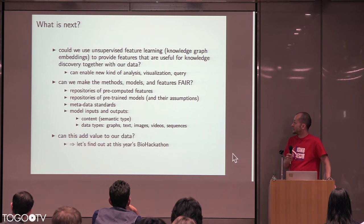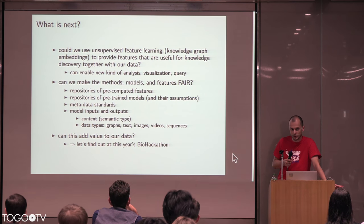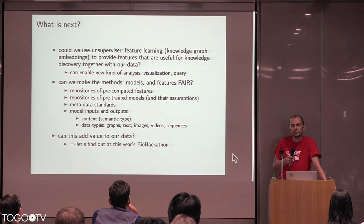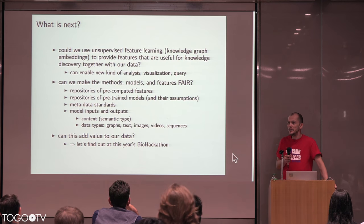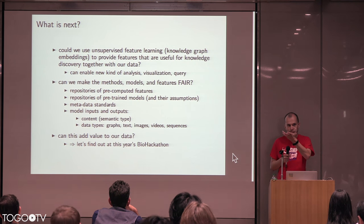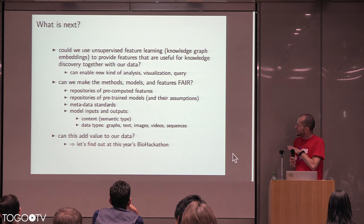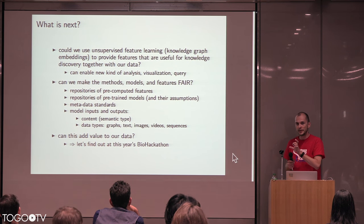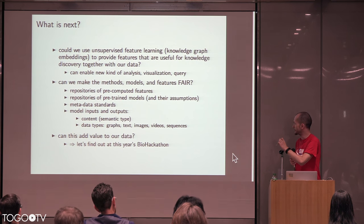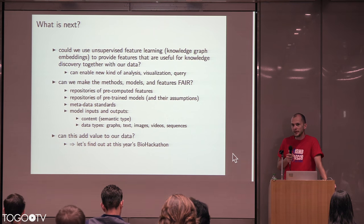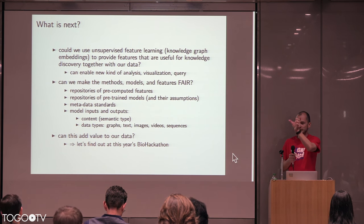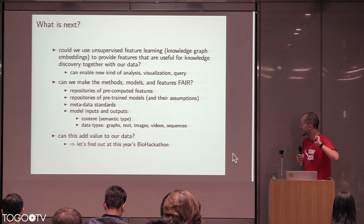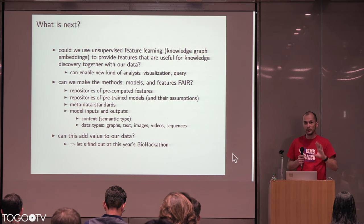There is a second part: can we make the models and features that we and others generate more FAIR? At the moment, if you want to find a machine learning model and reproduce it, it is incredibly hard to reproduce results — even generating the features people used and wrote a paper about is incredibly difficult. To make this findable, we need some kind of repository or registry for the features, the models, and the results — the outputs of these models that people have produced. We also need standards to annotate them: what does this model take as input, what does it output, what is the biological transformation it is supposed to perform? As far as I know, nothing exists for this, and we are in an ideal position to start something like this. We also need this across different data types: graph, text, image.